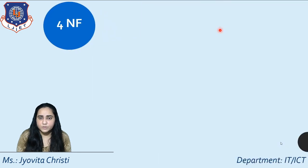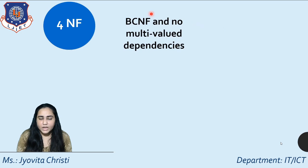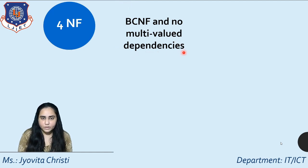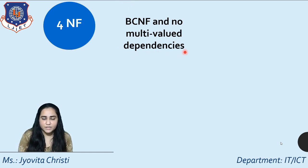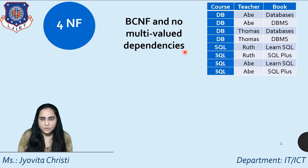4NF stands for the fourth normal form. The condition is that the relation should be in BCNF and there should be no multivalued dependencies. We need to understand what a multivalued dependency is, so let's take a look at an example table.